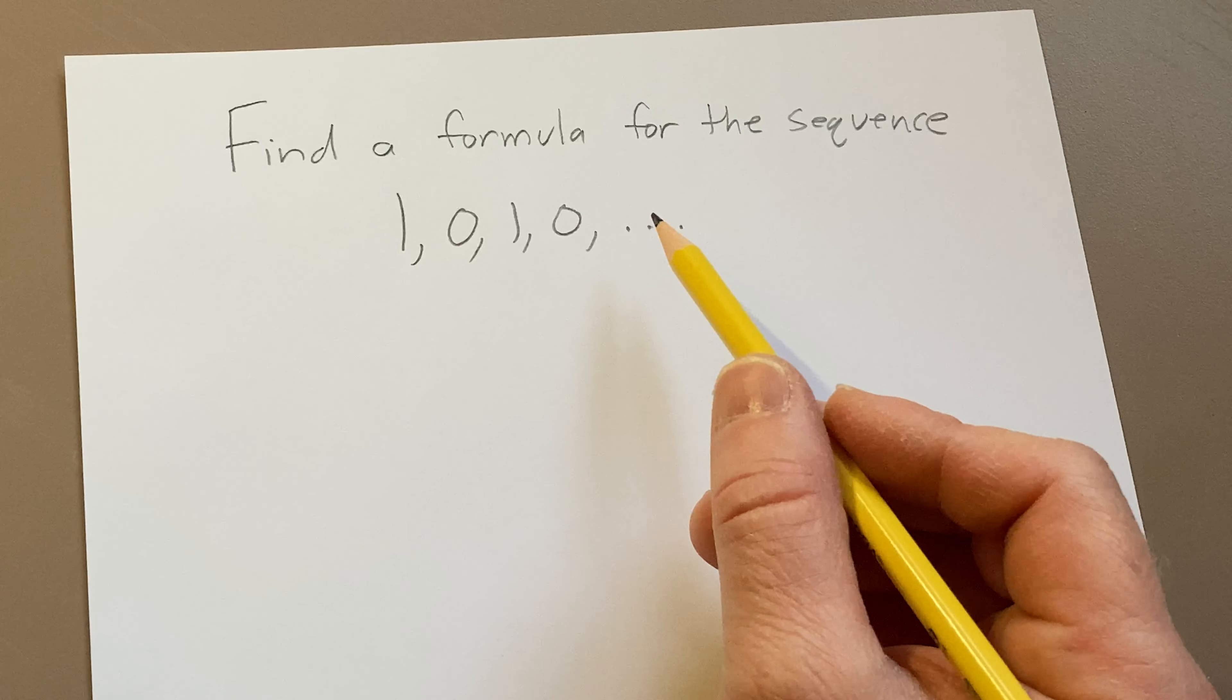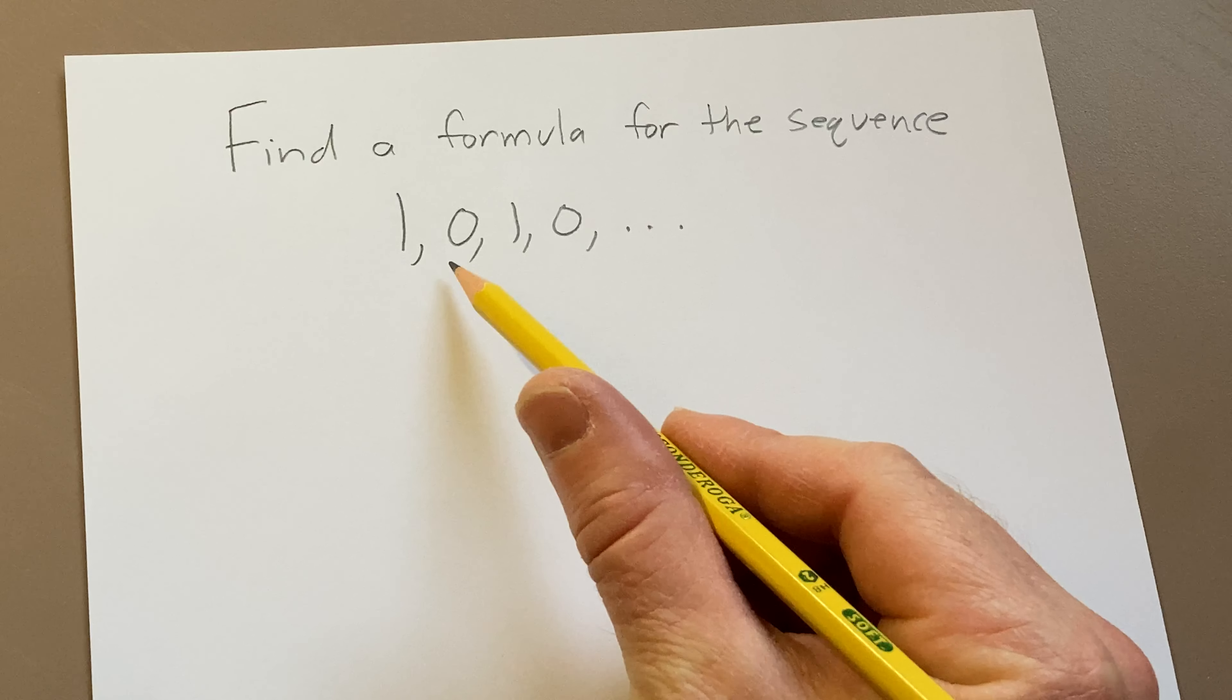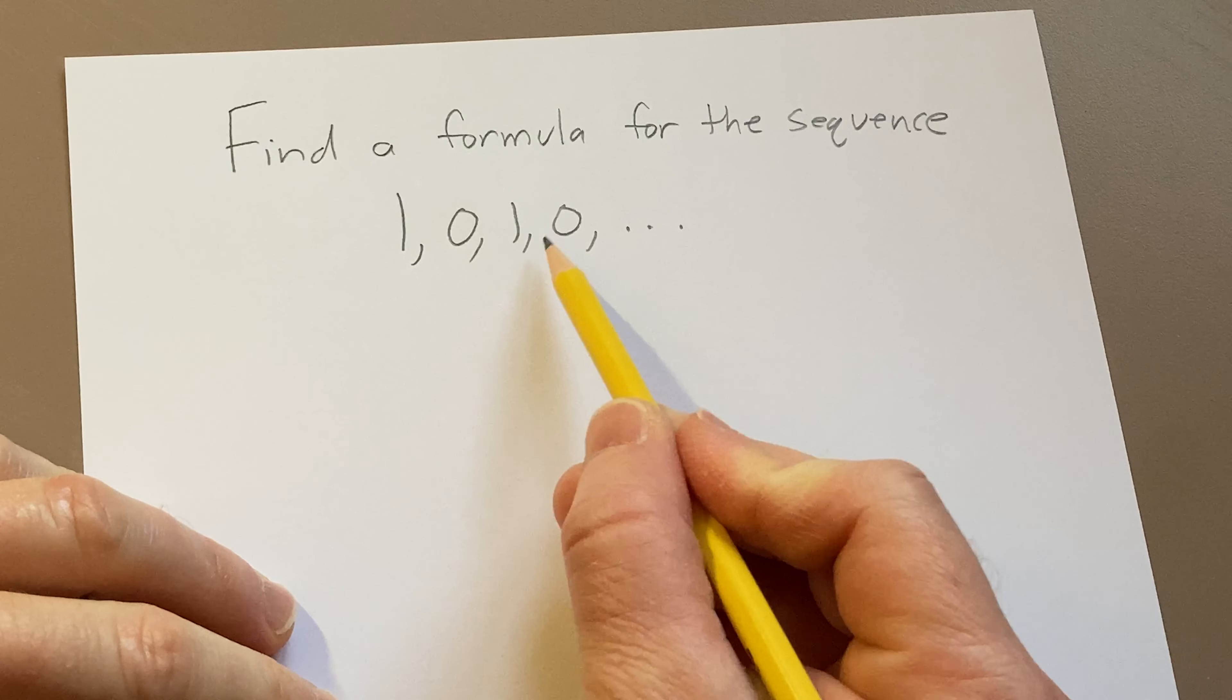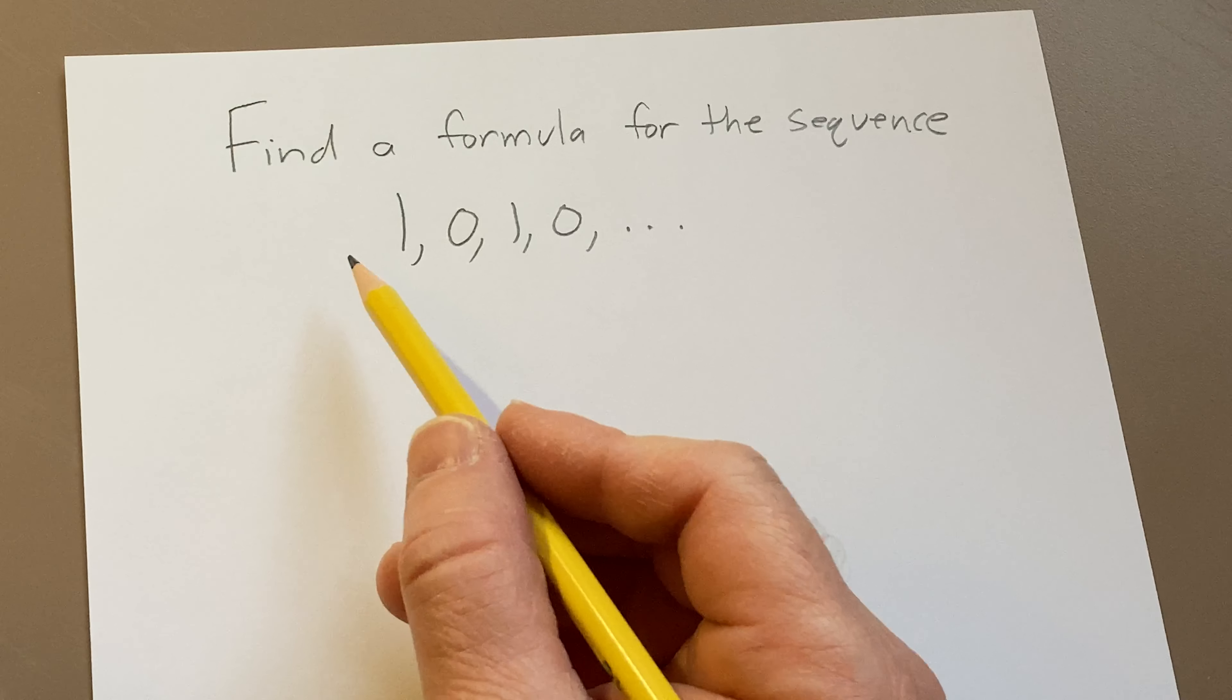Hi, in this video we're going to try to find a formula for this sequence. So we have 1, 0, 1, 0, and the three dots indicate that it goes on forever.